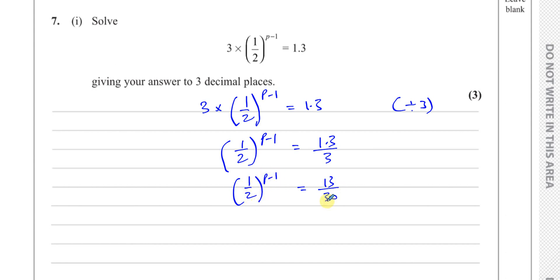So that's a half to the power of P minus 1 equals 13 over 30. Now in P1 type questions, you'd need this to be expressible as 2 to the power of something — but obviously we can't express 13/30 as 2 to the power of something. So we're going to resort to using logarithms, which is a P2 topic.